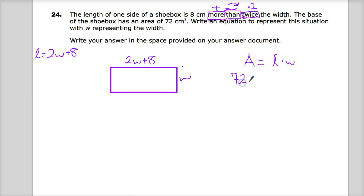And then I'm going to substitute in any of the values that I need. 72 centimeters squared. And then length is, of course, 2W plus 8 times W. Now, they want me to write an equation that represents the situation with W representing the width. I'm writing it. This is essentially creating an equation in terms of W, which is what I did.